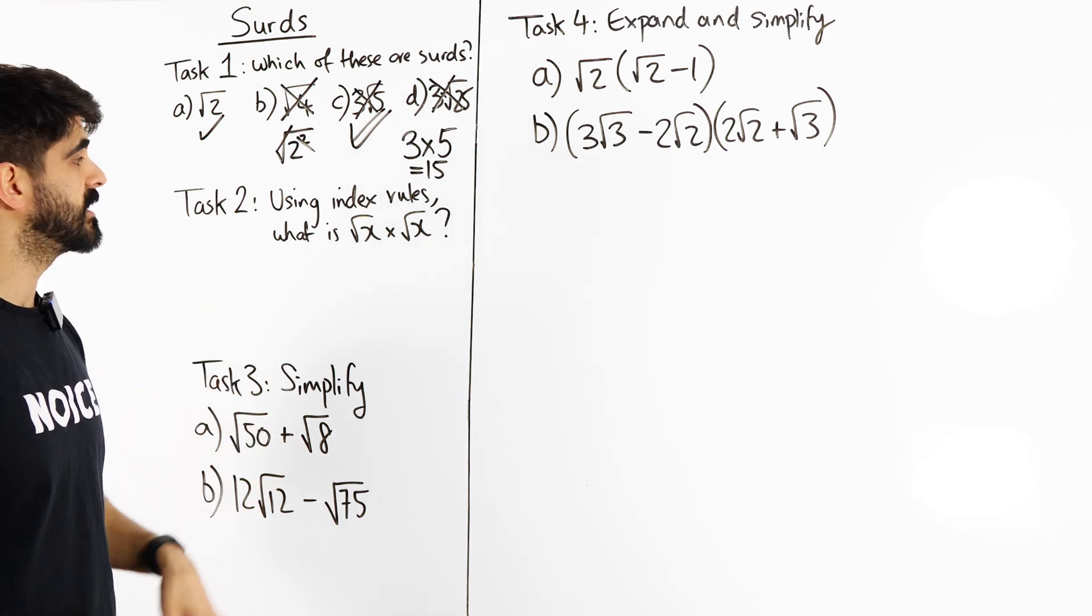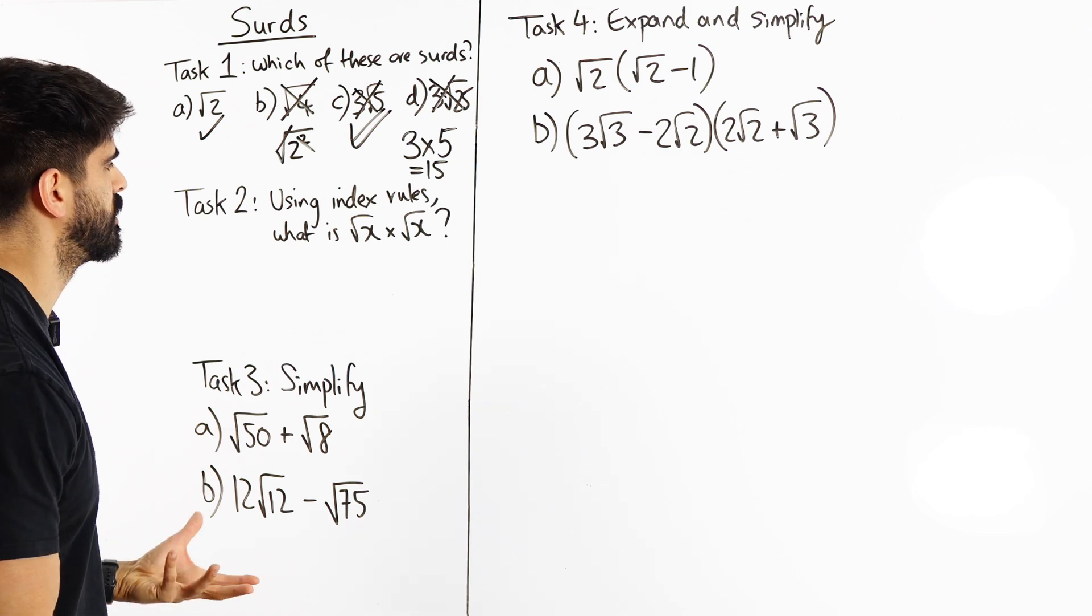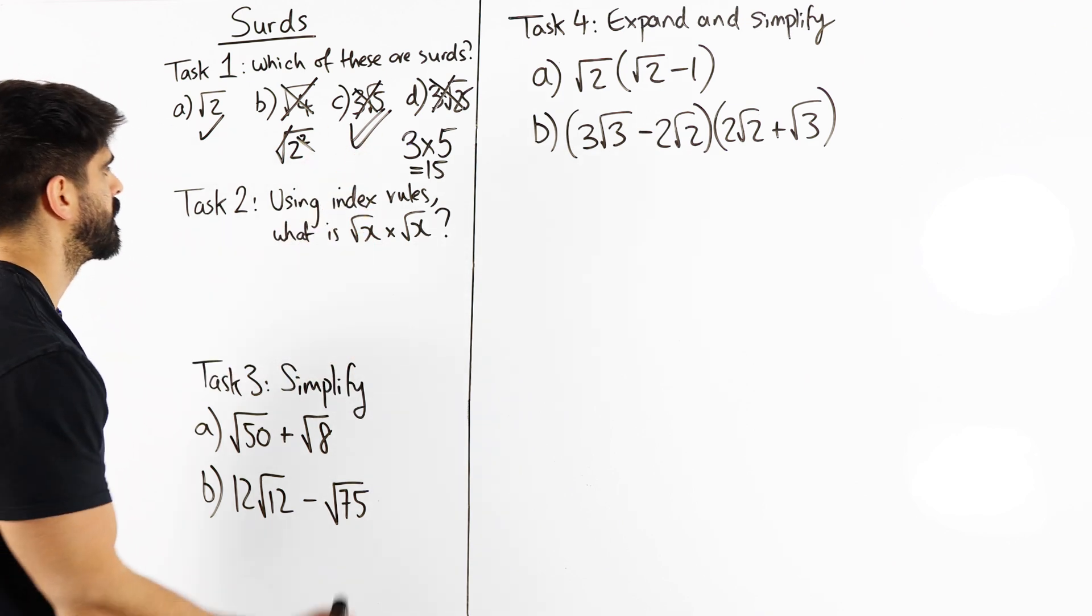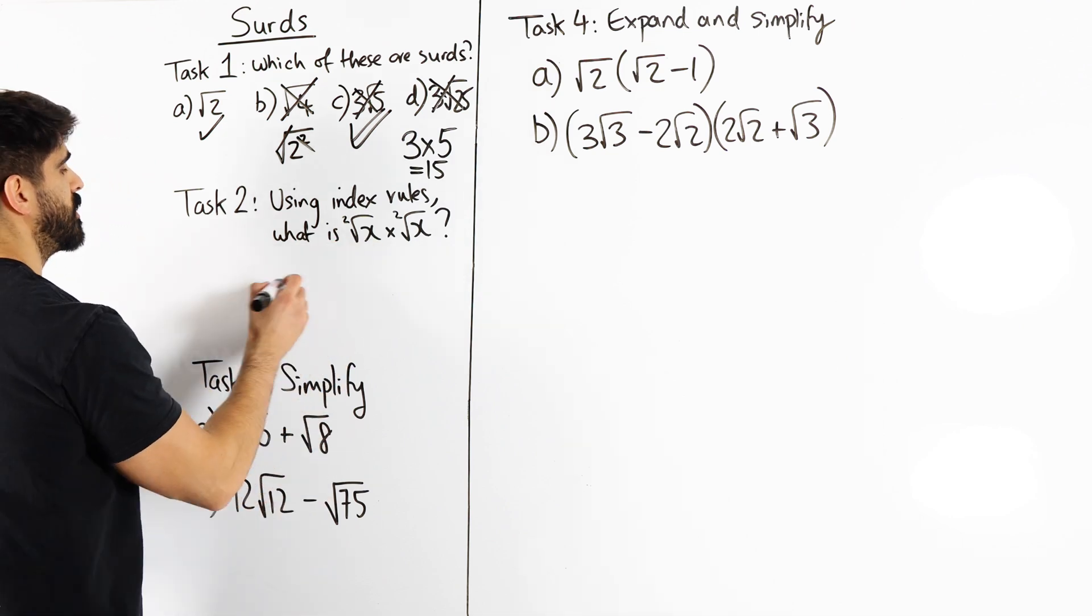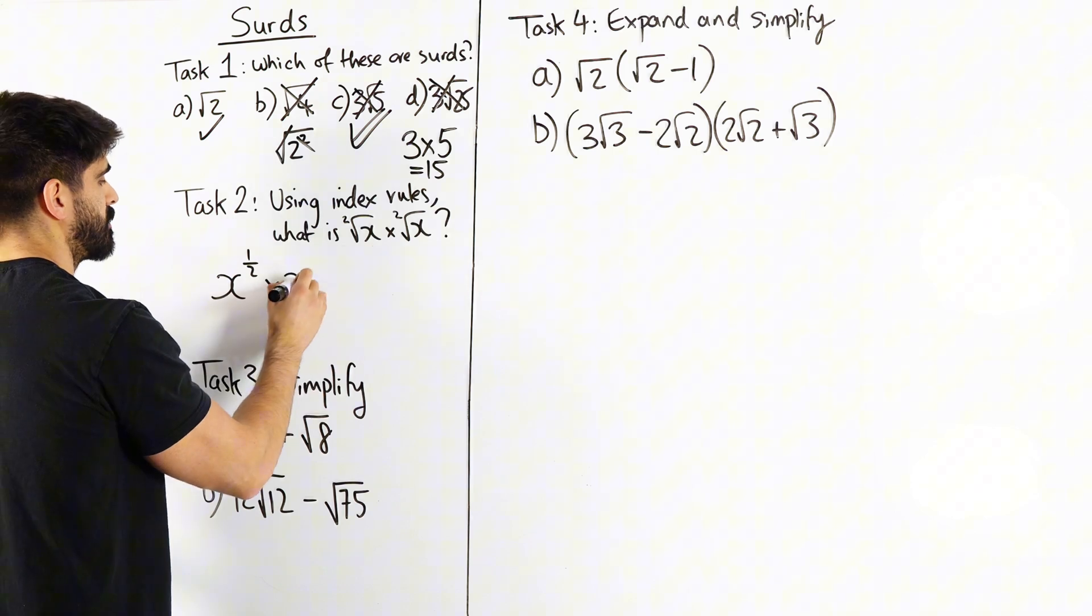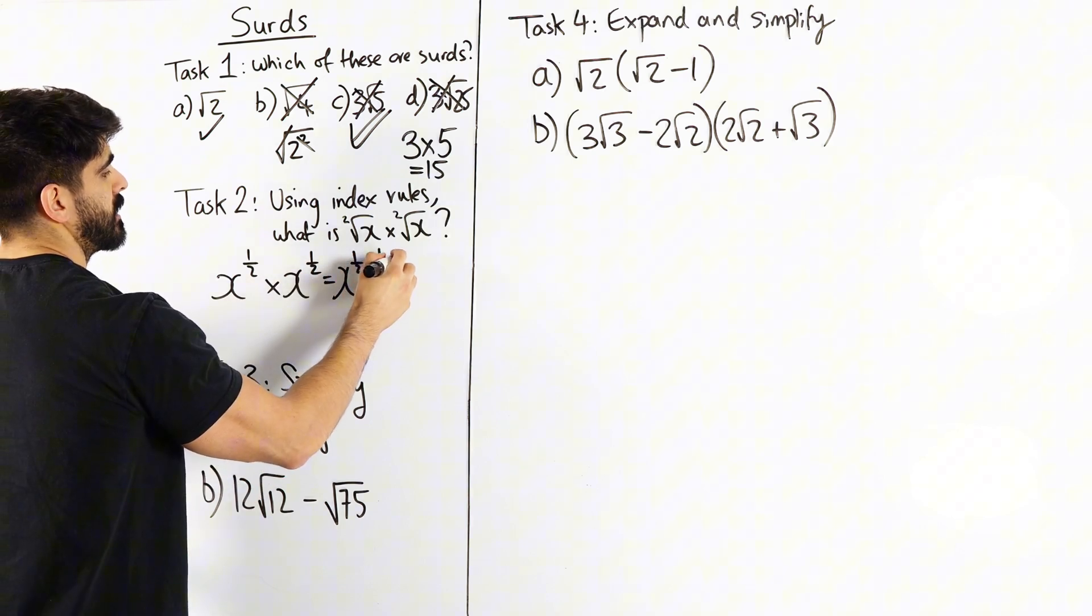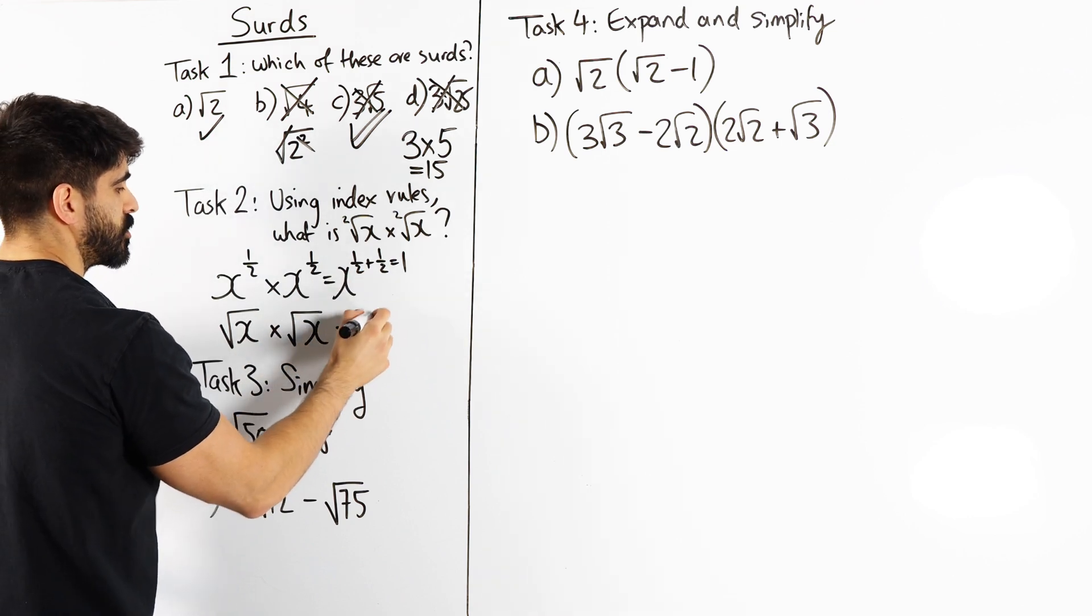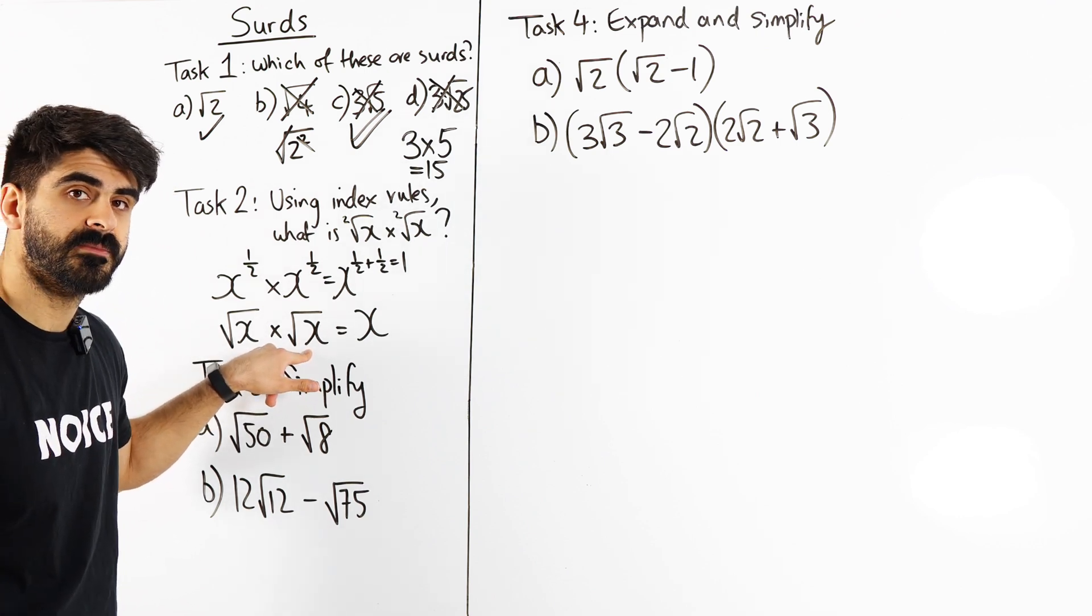The next most important thing we need to understand is when we multiply a surd by itself. So using your index rules, what is root x times root x? Now when we did our introduction or when we did fractional powers, we said the root determines the fractional power. Now in these roots, there is a 2 here which we don't need to write down because this is just common notation. So this is saying x to the power of a half. Remember the denominator tells you which root you're taking. So this is x to the power of a half times x to the power of a half. When you multiply two numbers with the same base, you add the powers. A half plus a half is 1. Interesting. So when you take a surd and you multiply it by itself, we are left with x to the power of 1 which is just x. Now that makes sense because this means you're squaring the surd. When you square a surd, it just gets rid of the root.